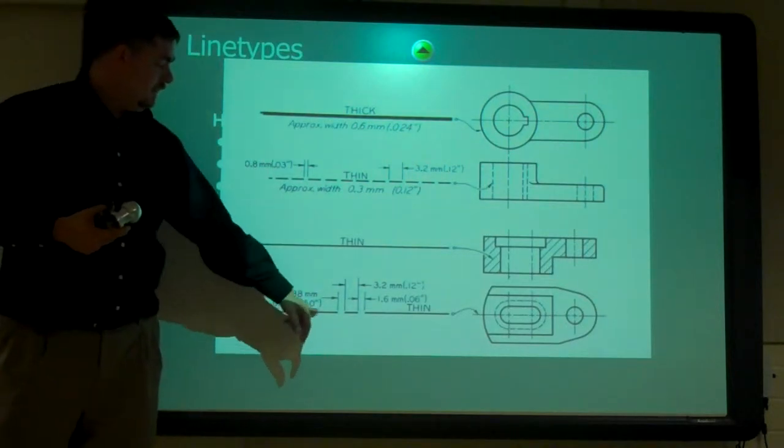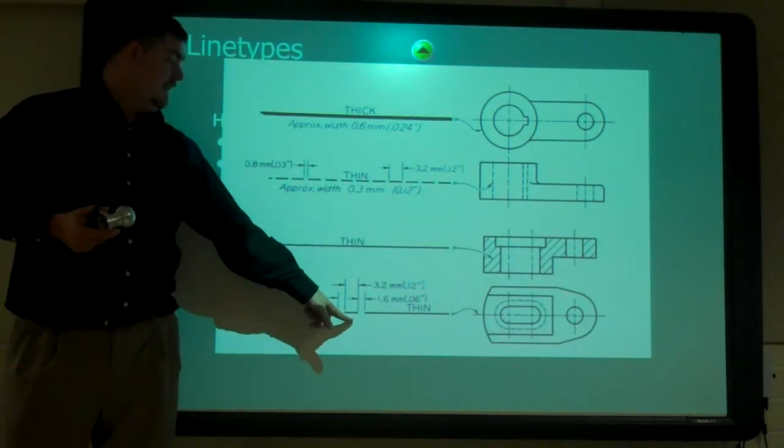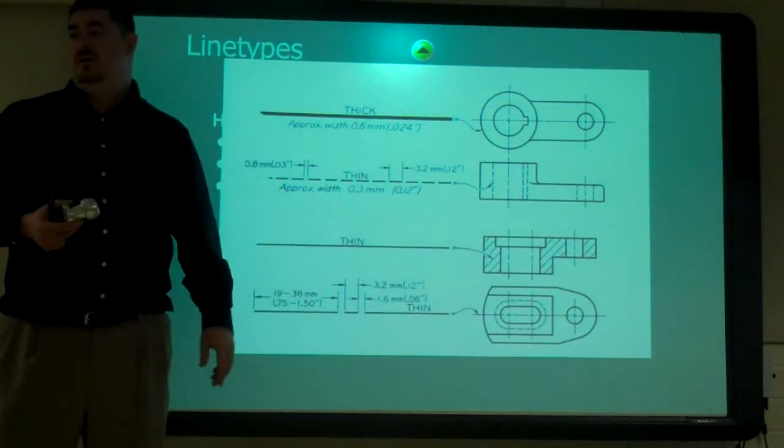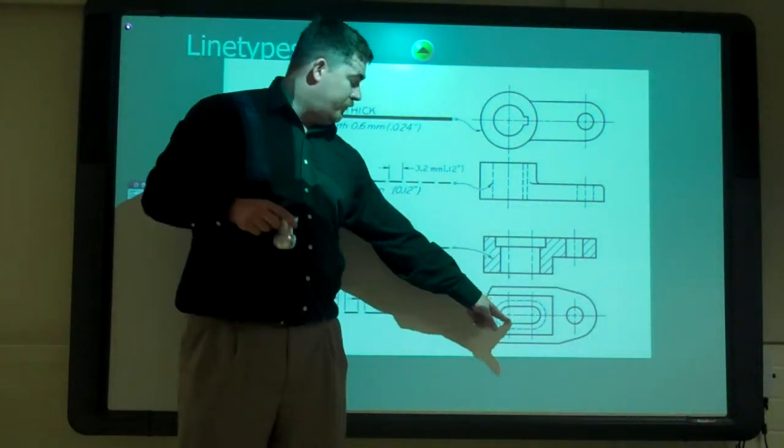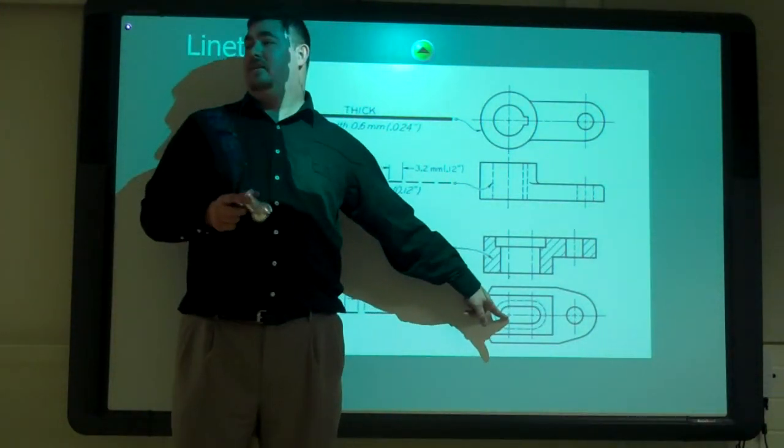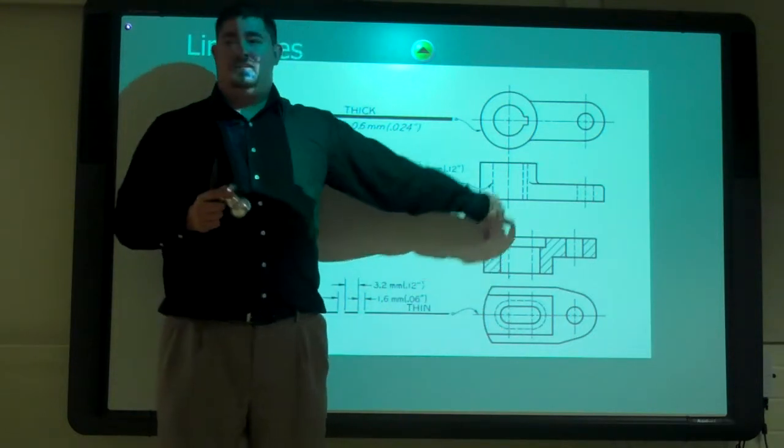And then we have center lines, which is a long dash, then a little dash, then a long dash. For a hole, we just have one little short dash in the middle of the circle. For the axis, we just have one little dash in the middle of it.